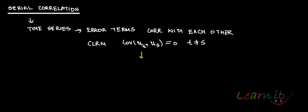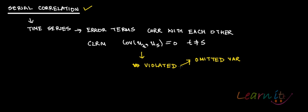This particular assumption is violated when error terms are correlated, and this is exactly the problem of serial correlation. This violation might occur because of omitted variables, misspecification of the functional form, or even because of measurement errors.